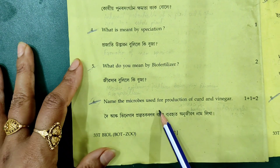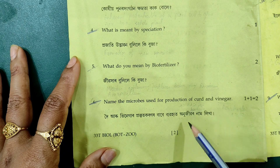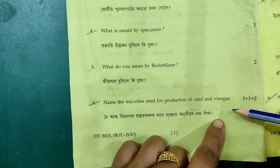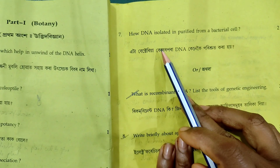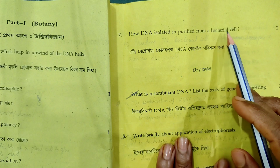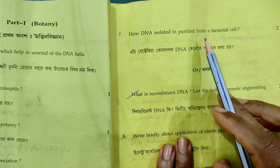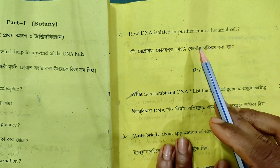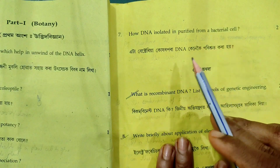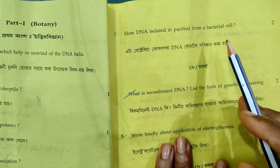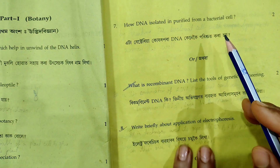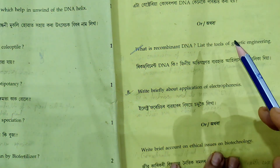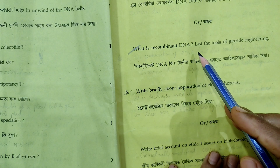Name the microbes used for production of curd and vinegar. Next question: how is DNA isolated and purified from a bacterial cell? To isolate for purification. Next: what is recombinant DNA (rDNA) technology?